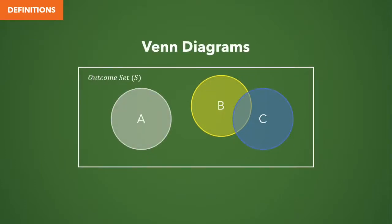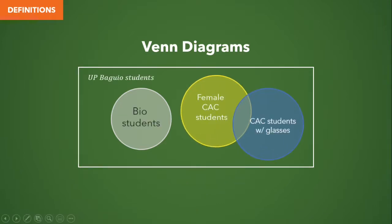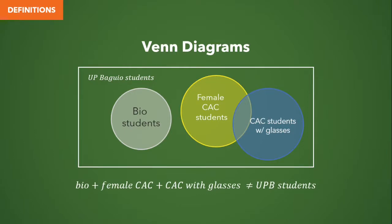When drawing event diagrams, you should always understand your sample space and your events. If we have a particular event diagram where events A, B, and C are subsets of the outcome set, this doesn't mean that adding events A, B, and C gives us the entire outcome set. We still have an area outside these events but still inside the outcome set. For example, if we are sampling UP Baggy students, we have bio students as one subset, female CAC students as another, and CAC students with glasses as a third. These two subsets are conjoined because we can have female CAC students who are wearing glasses. If we add bio students, female CAC students, and CAC students with glasses, that's not the entire UPB students — we still have an area outside these subsets which may be CSS students or other students and so on.